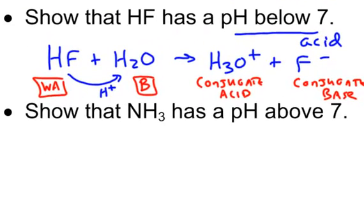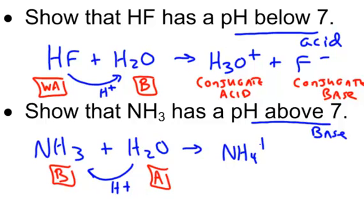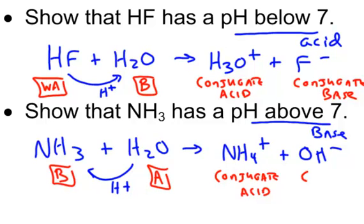Another equation: show that NH3 (ammonia) has a pH above 7, meaning it's a base. We combine ammonia with water. Ammonia is the base, water is the acid — and acids give away H+. So water gives away H+, giving us NH4+ and OH-. The NH4+ (ammonium) would be my conjugate acid, since it has a lot of H+ and could give it away again. The hydroxide would be the conjugate base.